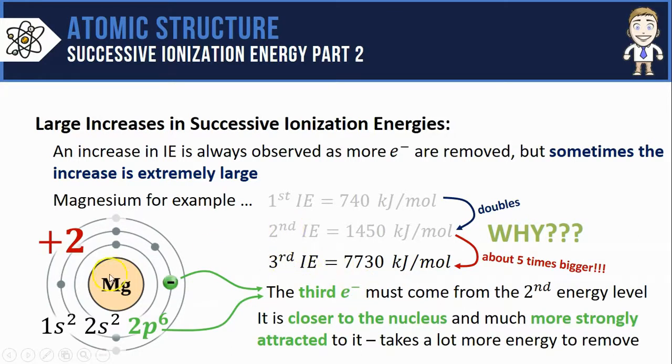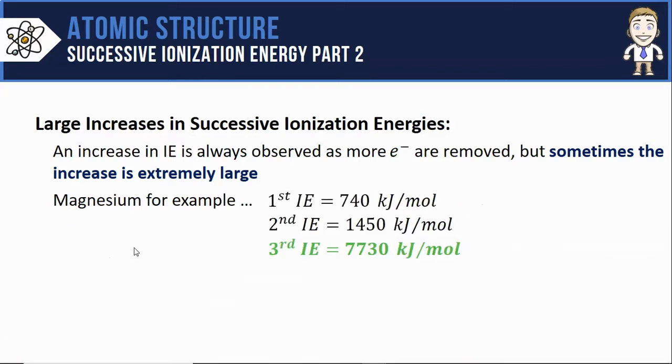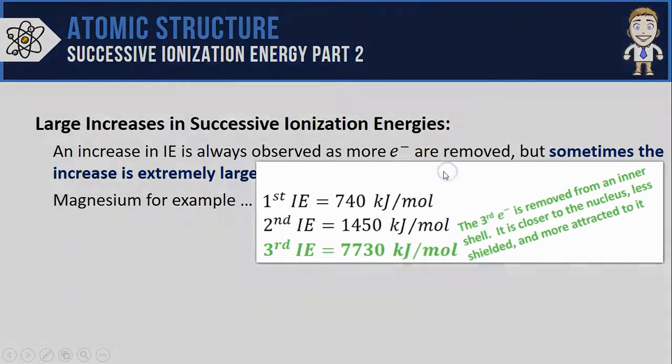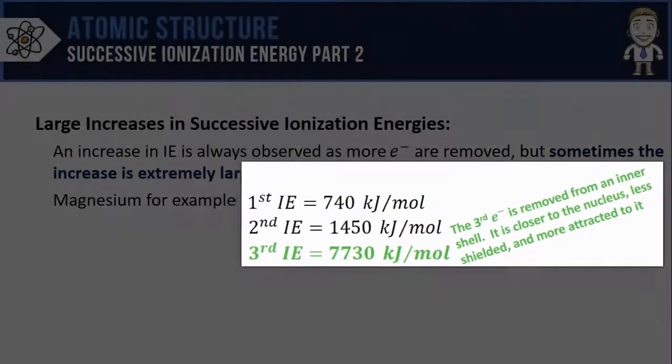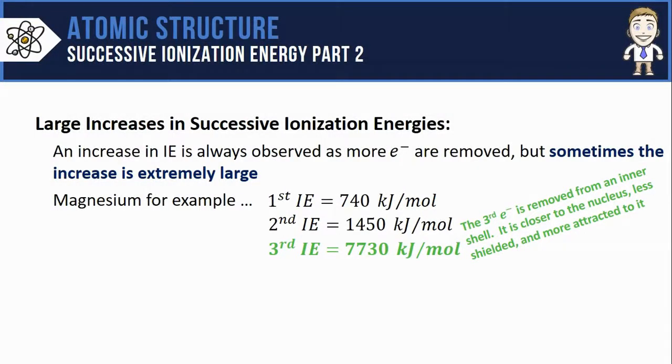To summarize why that third ionization energy is so much higher than the rest: it was removed from an inner shell, which means it's closer to the nucleus, less shielded from the nucleus, and more attracted to it. Let's take a look at how this would work with a sodium atom.